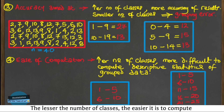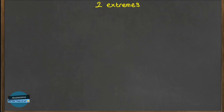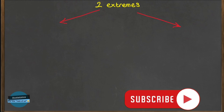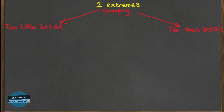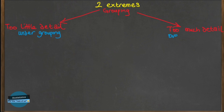As a researcher, you need to establish a balance between two extremes of grouping. The first extreme is grouping with too little detail — having only a few groups — which I call under-grouping. On the other hand, grouping with too much detail means having too many groups such that each observation almost has its own category, which I call over-grouping.